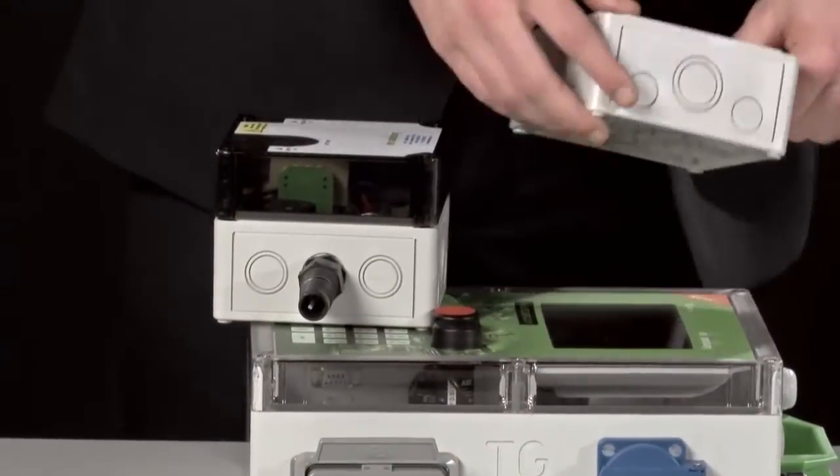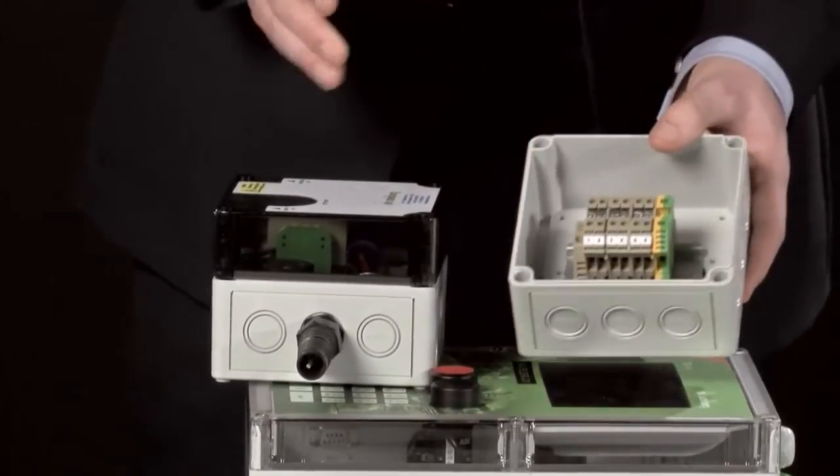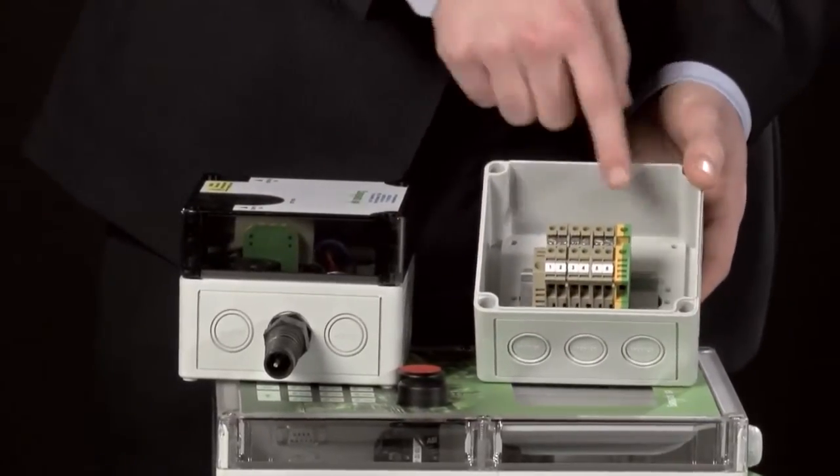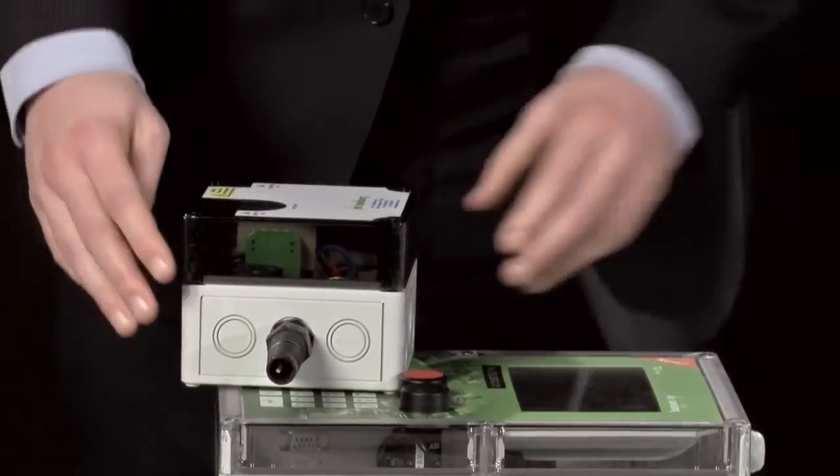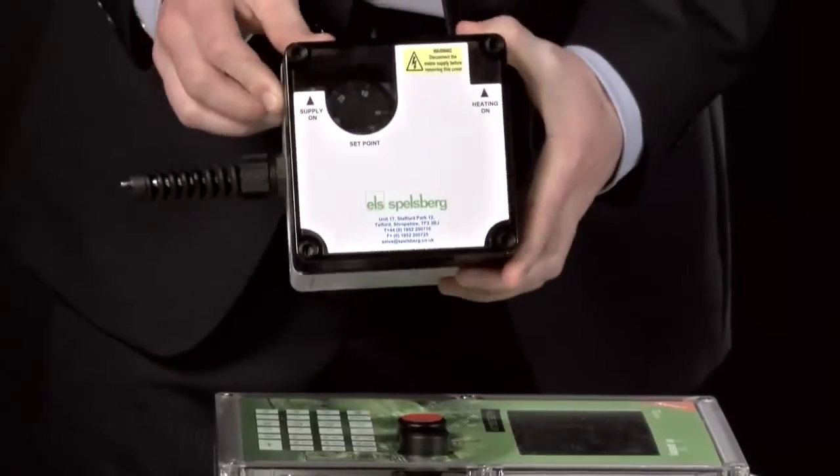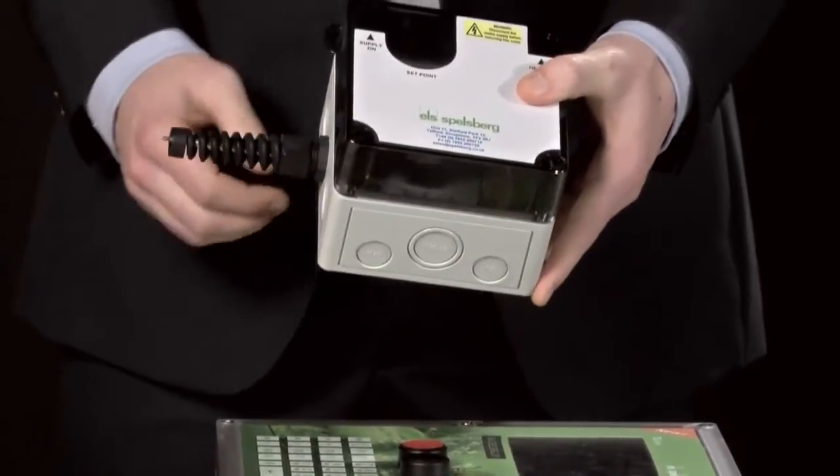Spellsburg is able to offer a wide range of pre-assembly options depending on your needs, starting with a basic DIN-mounted terminal, all the way through to complete solutions such as this thermostat, which is wired and delivered, boxed and ready to go.